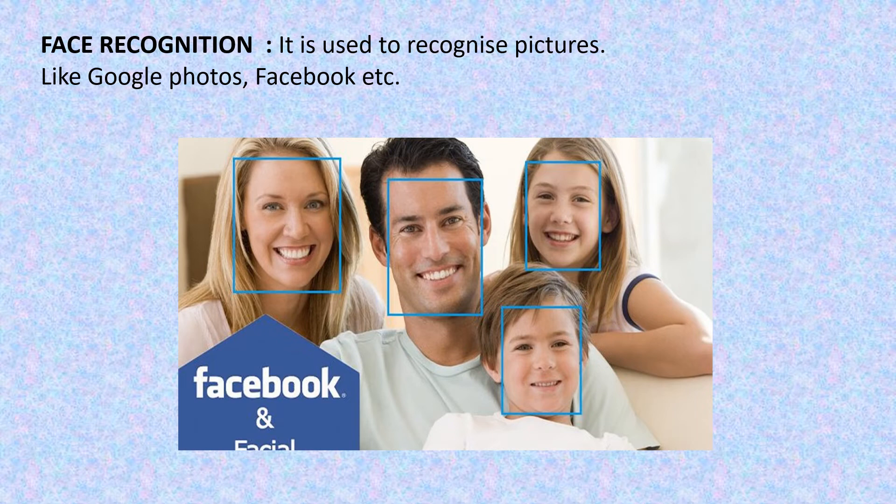Another application is face recognition. It is used to recognize pictures, like in Google Photos, Facebook, etc. When you upload any pic in Facebook or Google Photos, it asks you to tag your friends. The persons who are there with you in the pic must have their profile with pic in that app's database, and from there it takes the data and tags the people. So this is one example of computer vision.